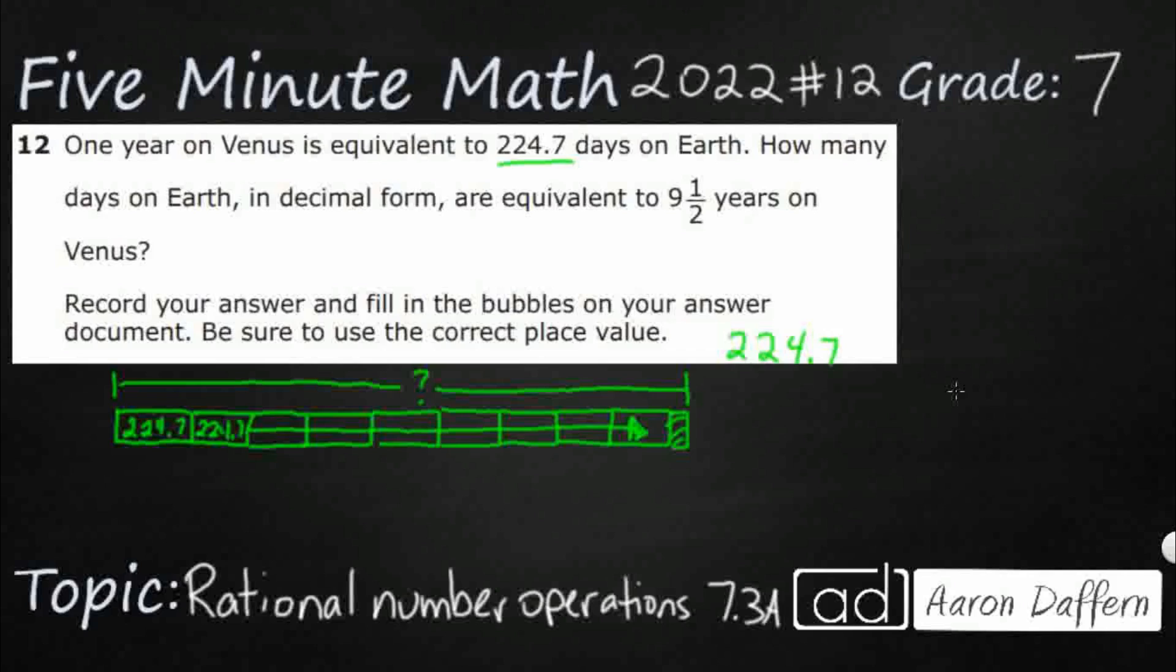Can't really multiply a mixed number, but 9 and a half, we need to know it's the same as 9 and 5 tenths. Those are equivalent fractions, 1 half equals 5 tenths, because I can put 0.5, 5 tenths. I can show that in decimal form.